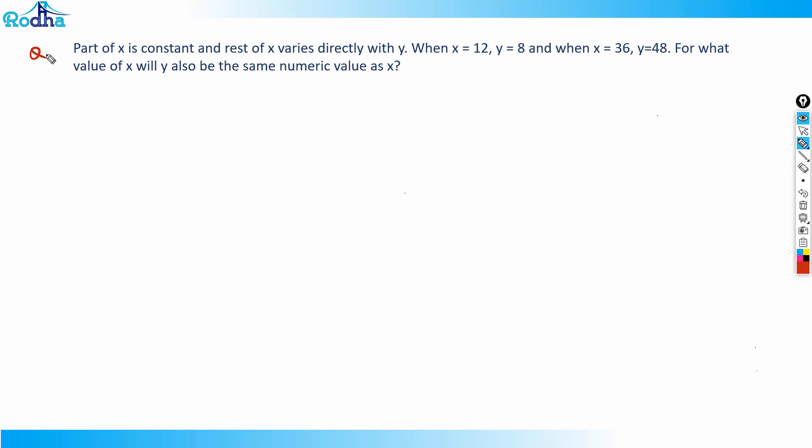Look at this question: part of x is constant and the rest of x varies directly with y. When x equals 12, y equals 8, and when x equals 36, y equals 48. For what value of x will y also be the same numeric value as x?